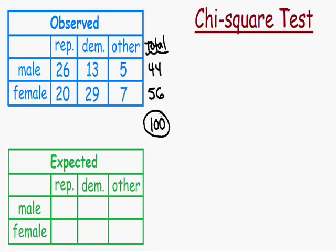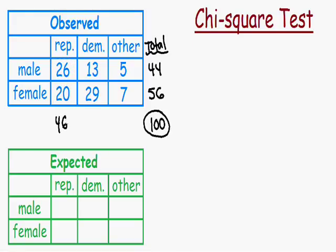Now let's do the same thing for all of the columns. Starting with Republicans: we have 26 male Republicans and 20 female Republicans. 26 plus 20 is equal to 46 total Republicans. Moving on to the column of Democrats, we have 13 male Democrats and 29 female Democrats. 13 plus 29 is equal to 42 total Democrats.